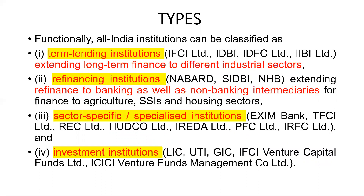Refinancing institutions provide refinancing facilities. If a bank or non-banking company has given a loan related to agriculture, household, or small industries, NABARD or SIDBI will refinance those loans so that lending institutions can be in a better position. Sector-specific institutions like Exim Bank focus on a particular sector — export and import. Investment institutions such as LIC, UTI, and GIC mainly focus on investments.